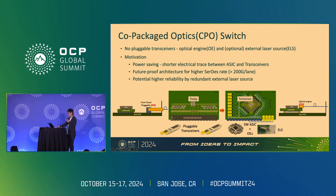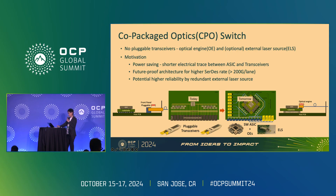In the slide, the left side shows a conventional switch using pluggable modules, while the right side shows the structure of a CPO switch. The motivation behind CPO switches is first power saving, since the distance between the transceiver and the switch ASIC can be shortened compared to using pluggable transceivers, making the SerDes of the switch ASIC more power efficient. Linear driver transceivers can also be considered in the CPO switch.